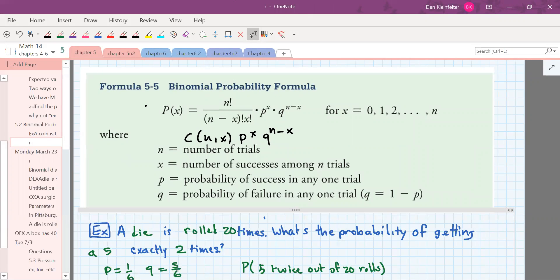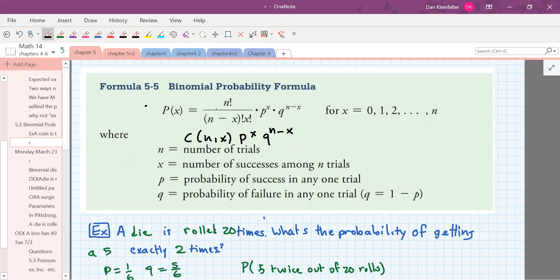The probability of doing x successes among n trials is a combination out of n objects, take x at a time, multiplied by the probability of success occurring x times, and that's multiplied by the probability of failure, that's q, multiplied by n minus x times.